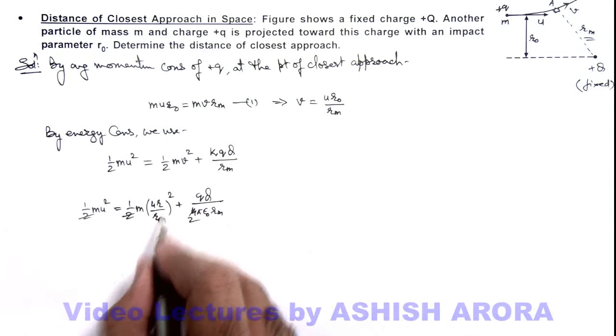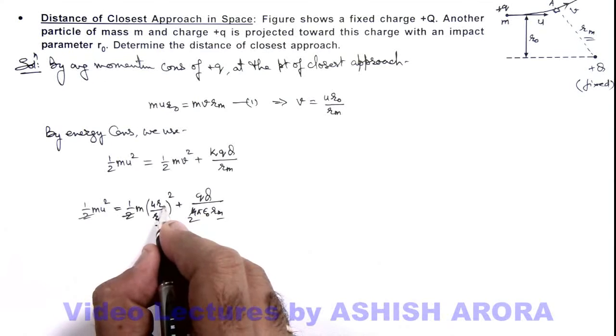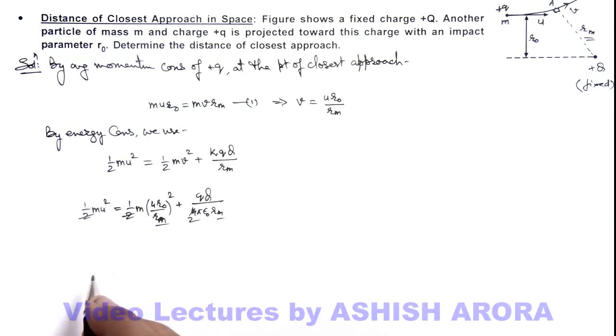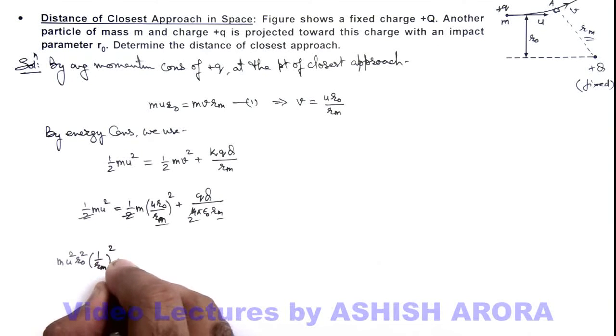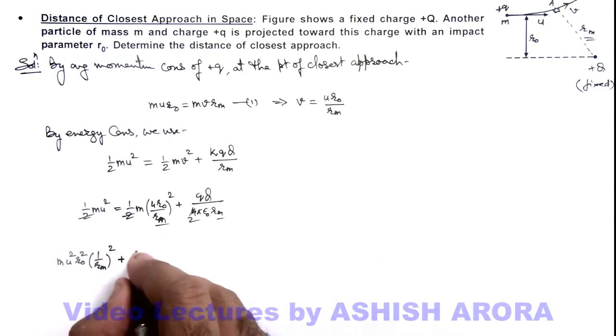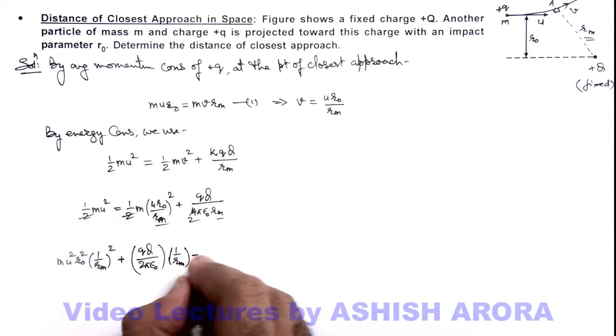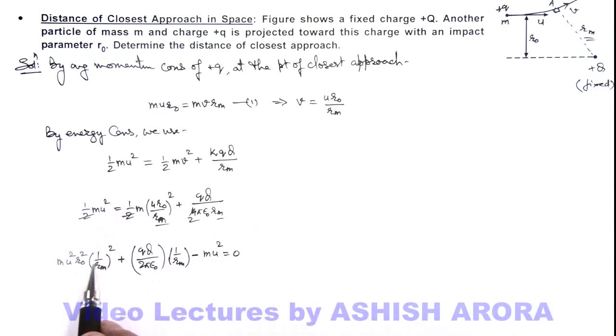this is a quadratic equation in the value of rₘ. So here if I substitute the value of rₘ by using the quadratic equation, I can calculate it. Let's write it in form of ax² + bx + c first. So this can be written as, I take these two terms on the left hand side. This will be mu²r₀²·(1/rₘ)² + qQ/(2πε₀)·(1/rₘ) - mu² = 0. So this is a quadratic in 1/rₘ.